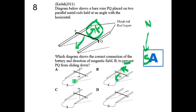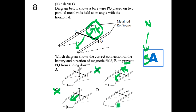Checking option C: magnetic field is upward, current flows from P to Q — the force is in the same downward direction as B, so C cannot be the answer. For option D: current flows in its direction with magnetic field going that way — the force is actually upward, but checking carefully against the required direction along the rods, this option also does not satisfy the requirement. The confirmed answer remains A.